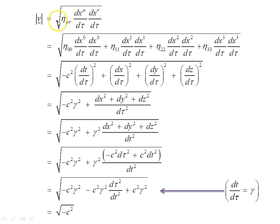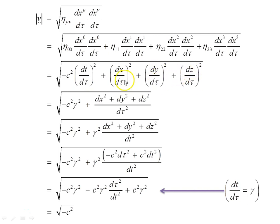The modulus of the tangent vector is the square root of this object. Expanding out for μ, ν = 0, 0; 1, 1; 2, 2; 3, 3 — corresponding to time, x, y, z coordinates — the η₀₀ term gives −c²(dt/dτ)², since x⁰ is time and (dt/dτ)·(dt/dτ) = (dt/dτ)², with the factor of c². Then plus (dx/dτ)², (dy/dτ)², (dz/dτ)², with a common denominator of dτ².